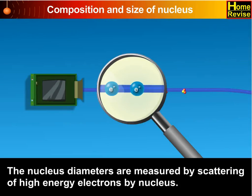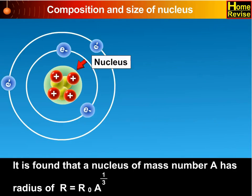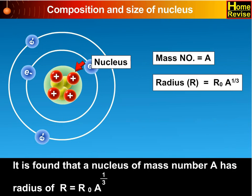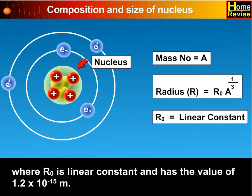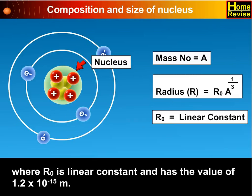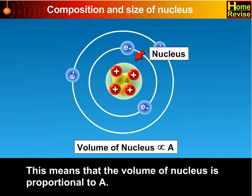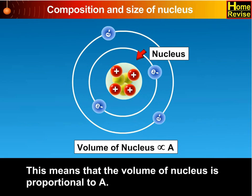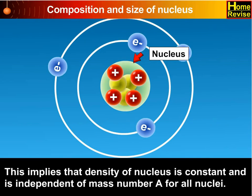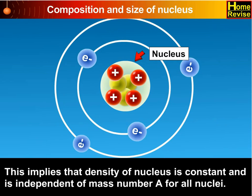The nuclear diameters are measured by scattering of high energy electrons by the nucleus. It is found that a nucleus of mass number A has a radius R equal to R0 multiplied by A raise to 1 upon 3, where R0 is a linear constant with a value of 1.2 into 10 raise to minus 15 meters. This means that the volume of the nucleus is proportional to A, which implies that the density of the nucleus is constant and independent of mass number A for all nuclei.